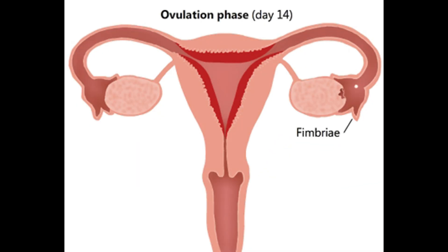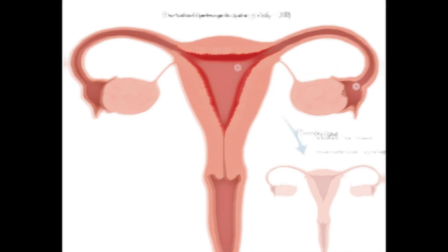The Ovulatory Phase starts on Day 14. A surge in LH, or luteinizing hormone, triggers ovulation, which is the release of a mature egg from the ovary.